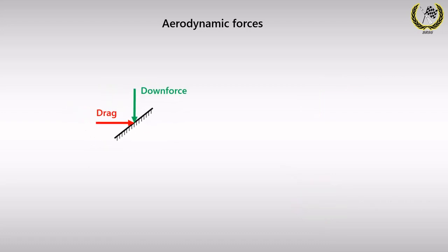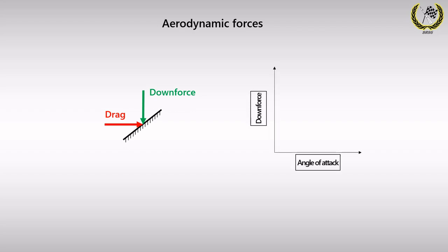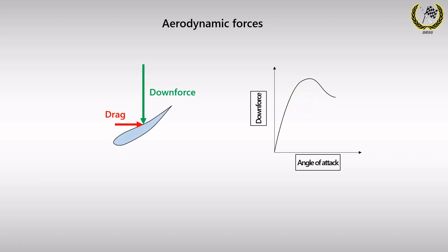Taking the plate into consideration, we have a graph showing how downforce varies with respect to the angle of the plate — or in the case of a car, the wing — relative to the direction of flow. This is called the angle of attack. Beyond a certain angle of attack, the flow starts to stall due to development of turbulent air, causing a sudden drop in downforce and aerodynamic efficiency. An airfoil is essentially a more efficient form of a plate, developing more downforce and less drag for the same given angle of attack.